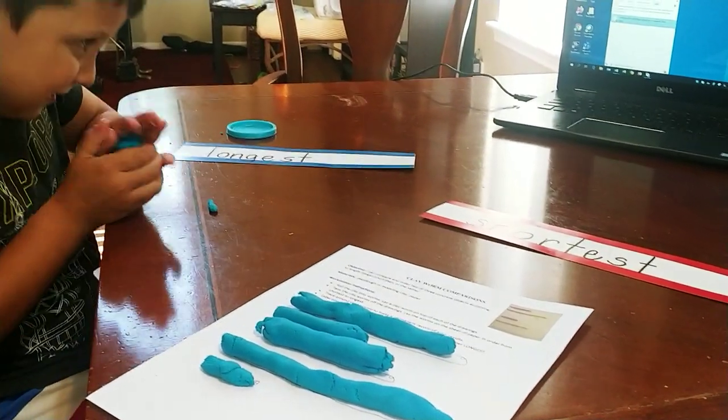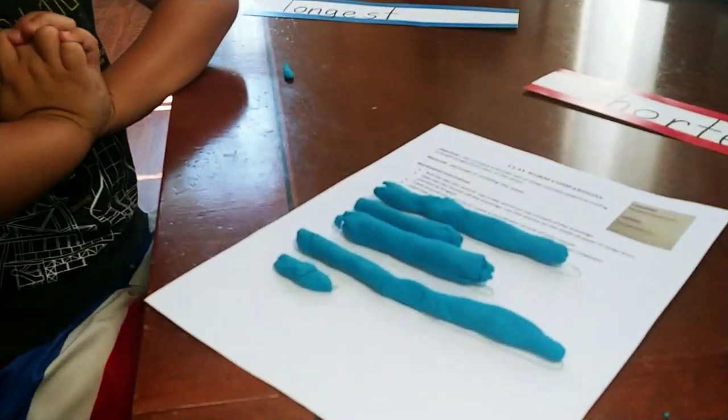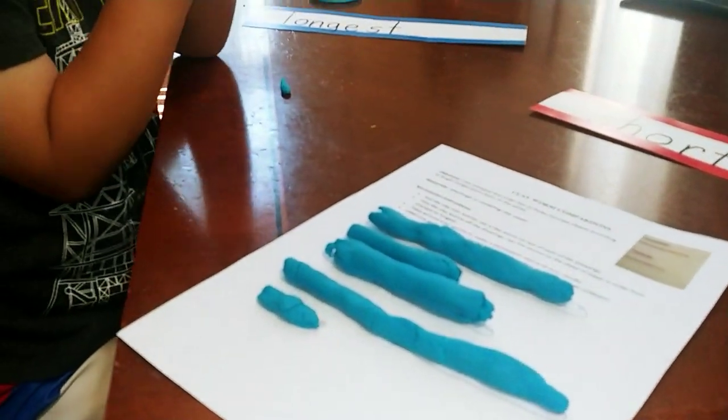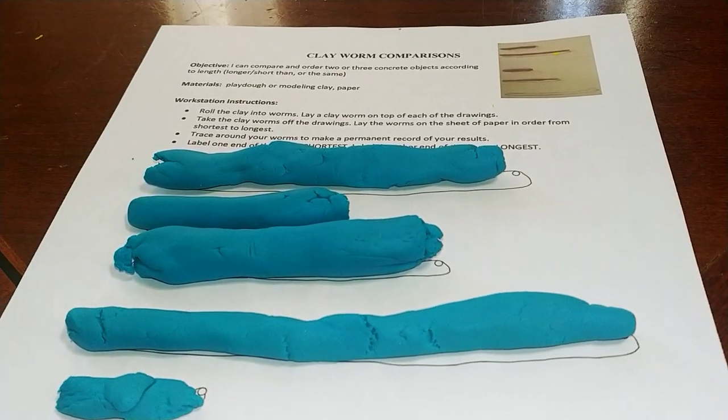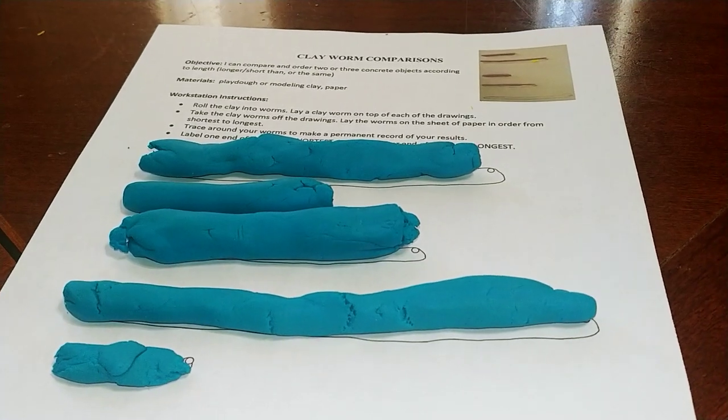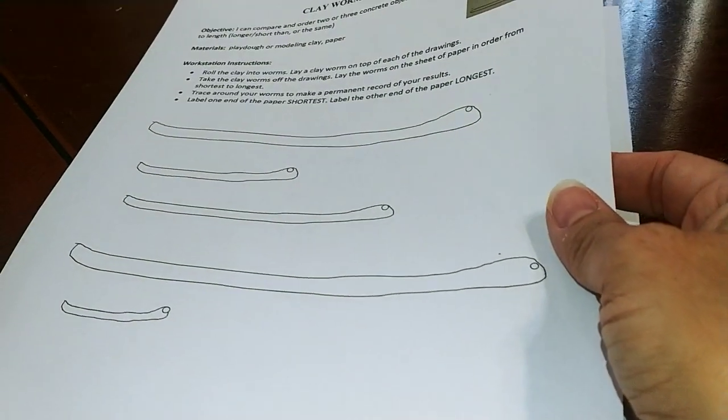Hi, Carrie Cutler here, author of Math Positive Mindsets: Growing a Child's Mind Without Losing Yours, and my five-year-old son Knox. We are working on an activity today called Clay Worm Comparisons. I put the black line master for this activity on my website so you would have the page that has the worms on it.